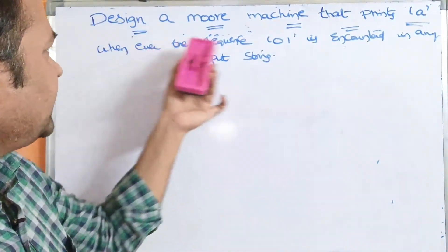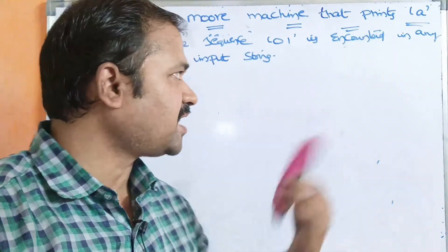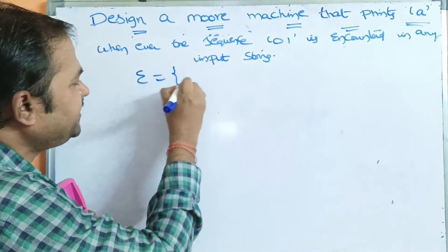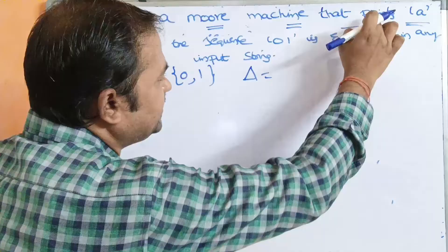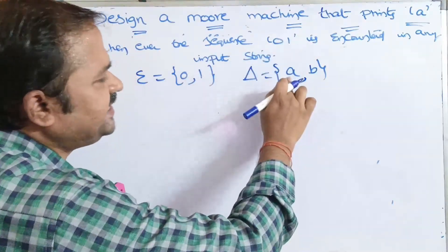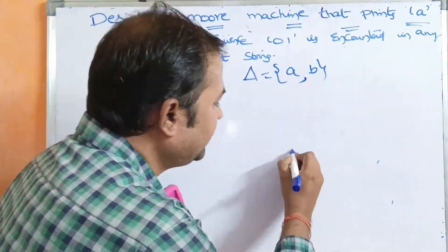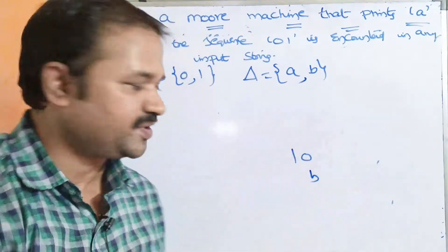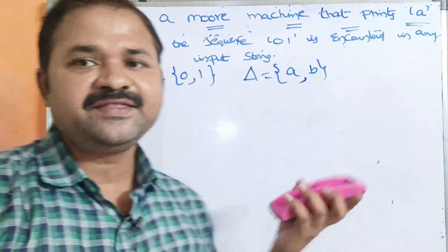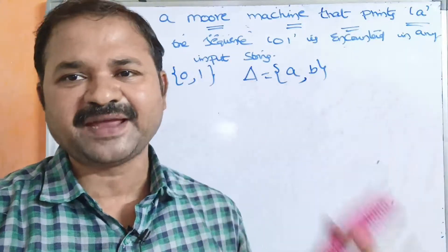Now let's see another example. Design a Moore machine that prints A whenever the sequence 001 is encountered in any input stream. The input alphabet contains 0s and 1s. The output alphabet contains A and B: if the sequence 001 is encountered it prints A, otherwise it prints B. We first construct the DFA, then convert it to a Moore machine, and verify with an input string.